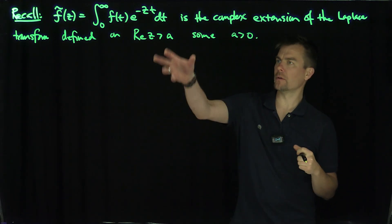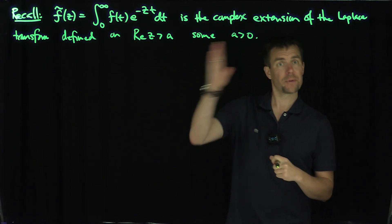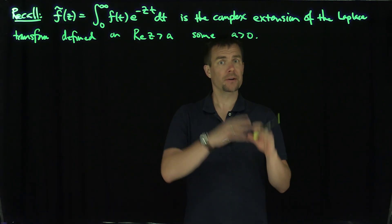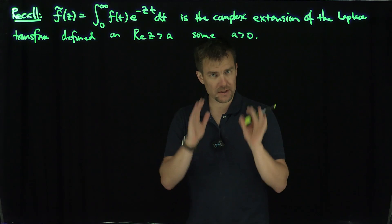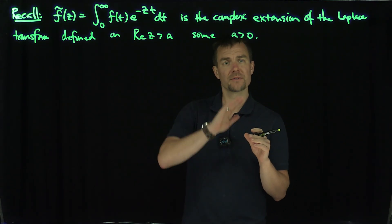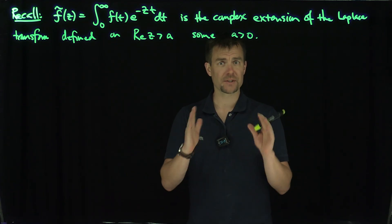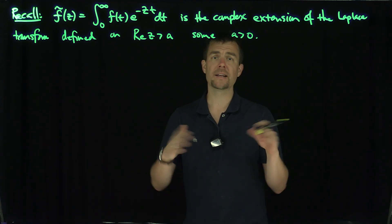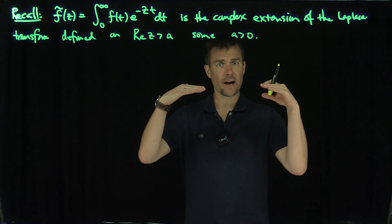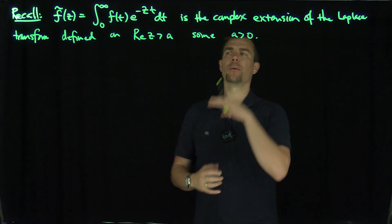It is defined on the set where the real part of z is bigger than a, for some a greater than 0. Whatever the abscissa of convergence of the Laplace transform is, I can extend it to the whole half-plane beyond that point. If s is bigger than a, the Laplace transform exists, and it transitions to the real part of z being larger than a — that's the half-plane where the Laplace transform exists in the complex plane, by the identity principle.